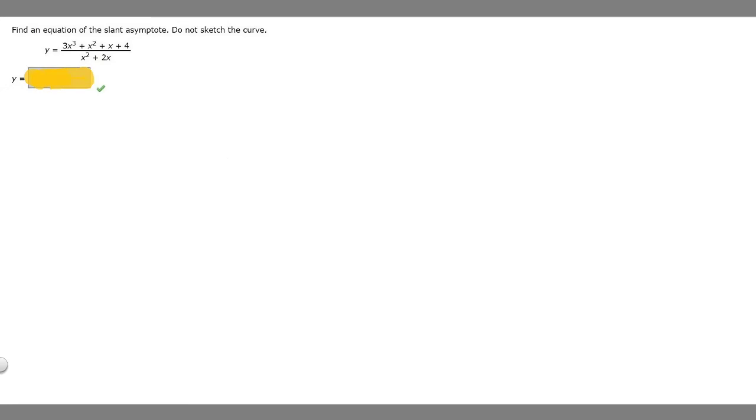So in this problem, we're told to find an equation of the slant asymptote, do not sketch the curve, and then we're given this function y equals 3x cubed plus x squared plus x plus 4 over x squared plus 2x.